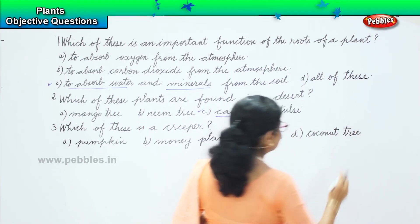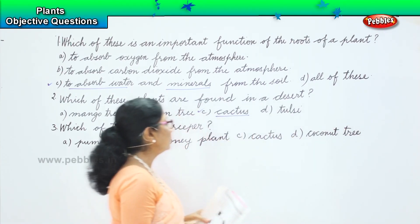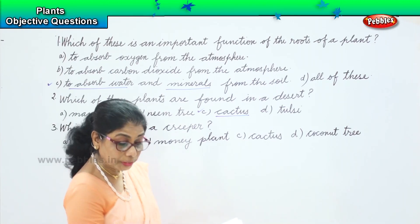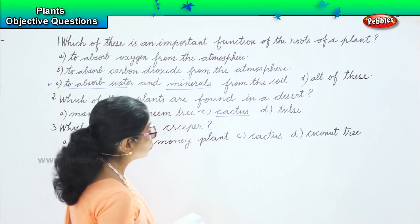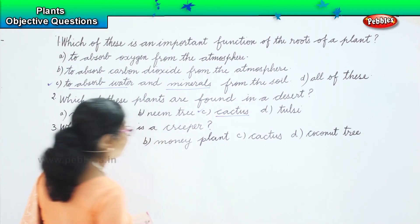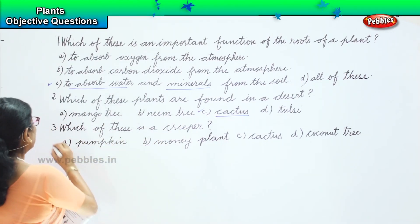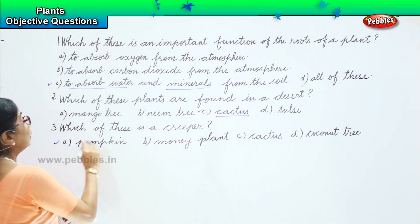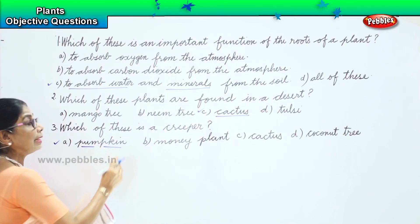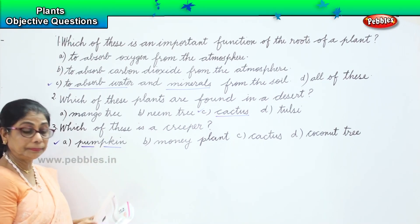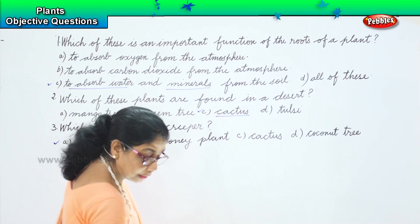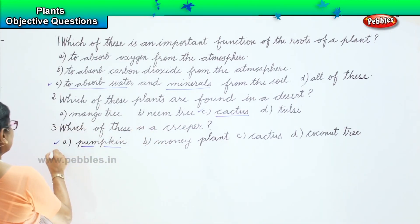Which of these is a creeper? Coconut tree? No. Cactus? No. Money plant? No. The pumpkin is a creeper. Option A — pumpkin — is the answer.